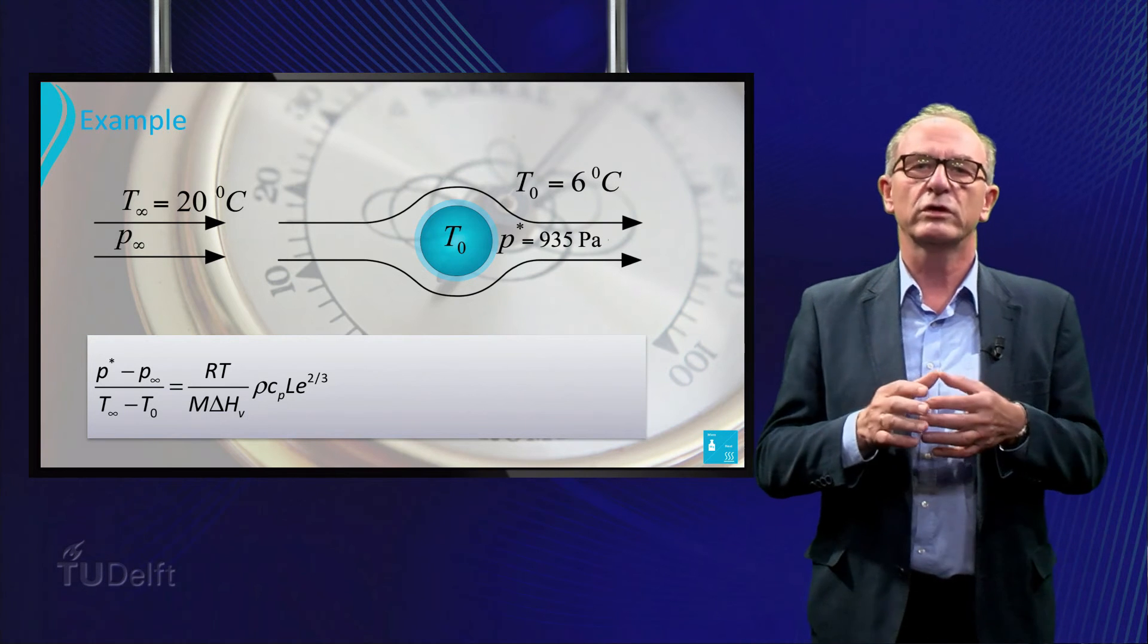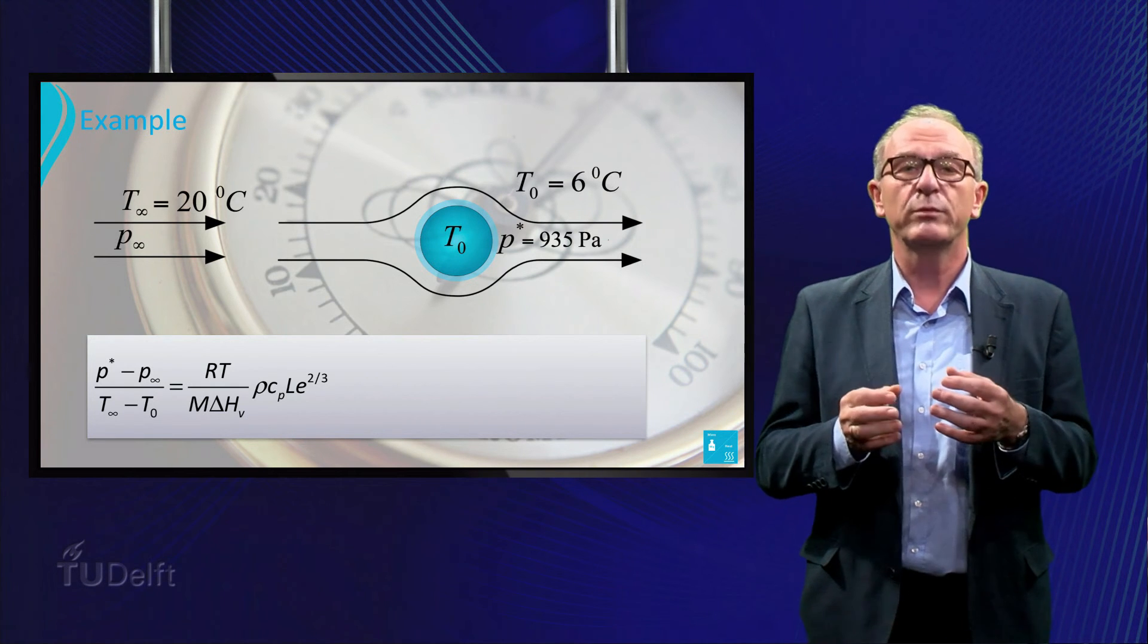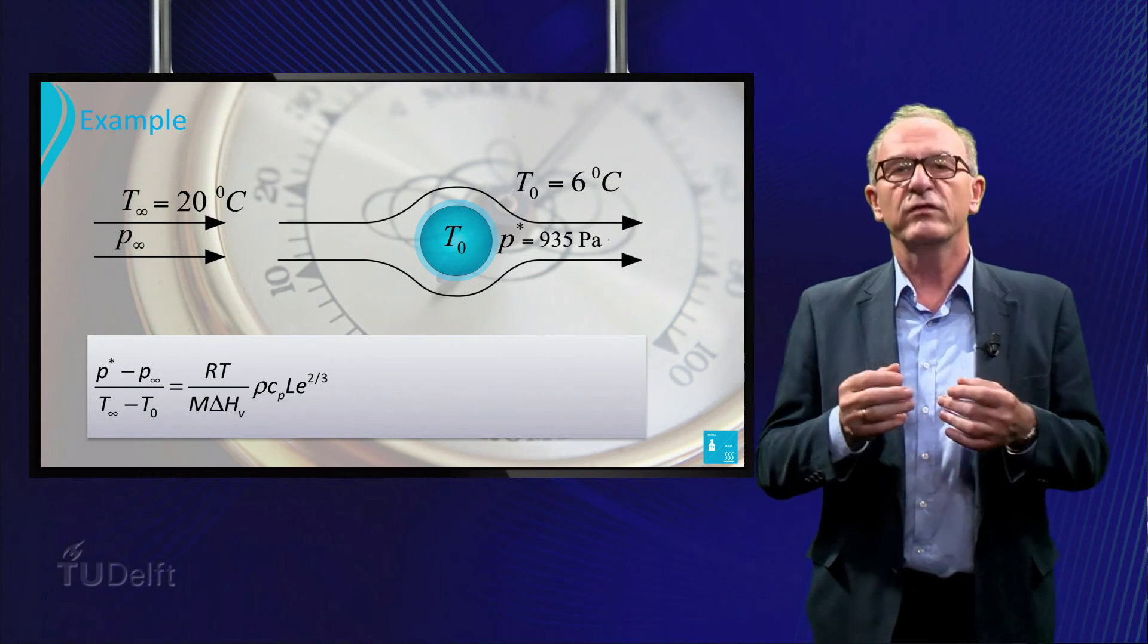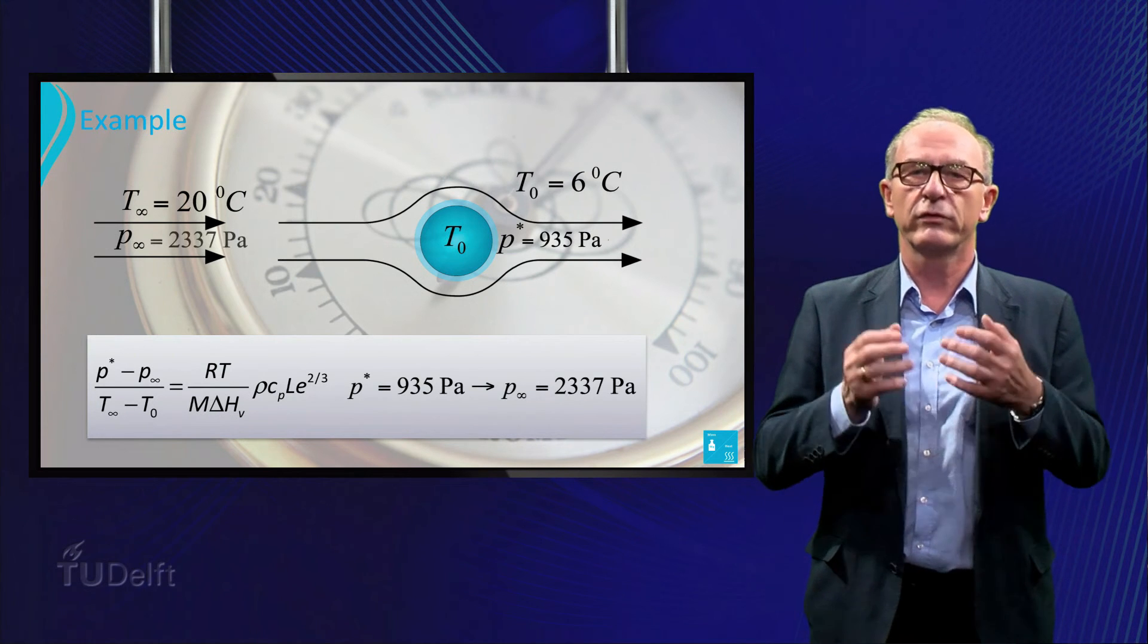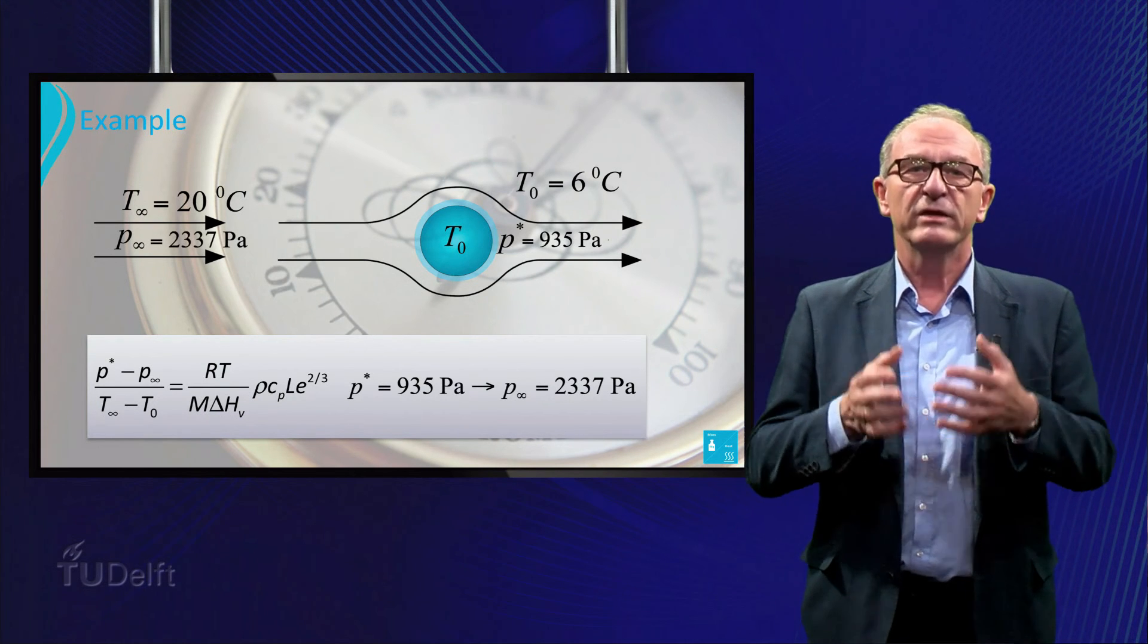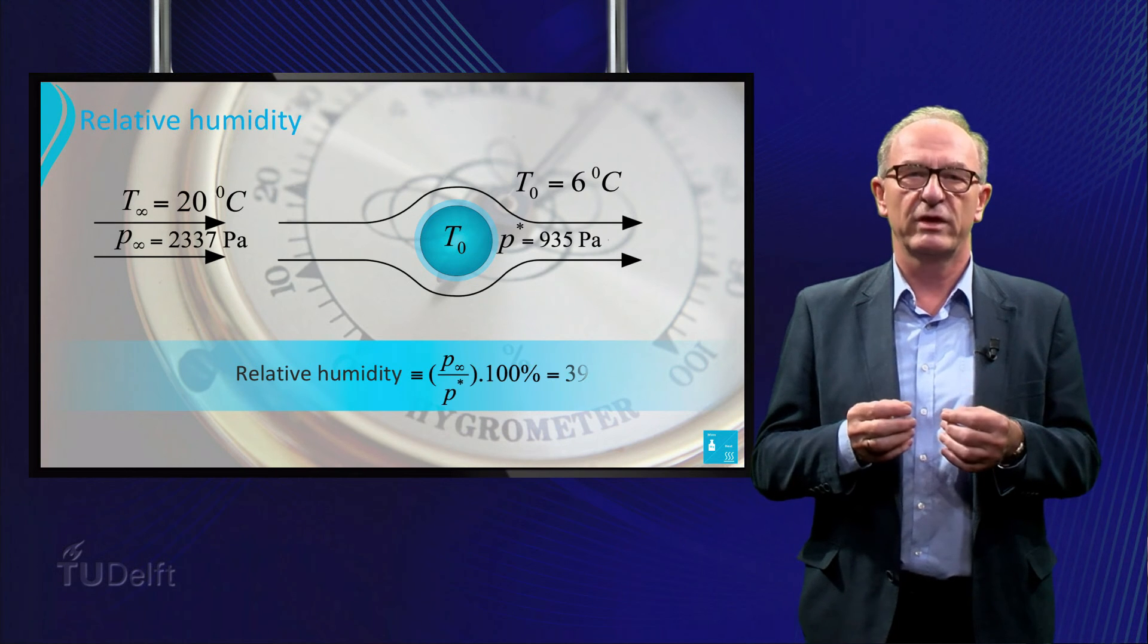If we now substitute all the other fluid properties, we can calculate P_∞. We find the value of 2337 Pascals. This gives us a relative humidity of 39%.